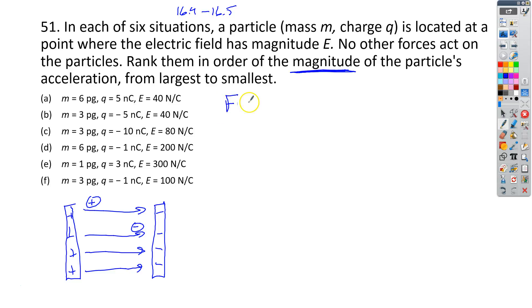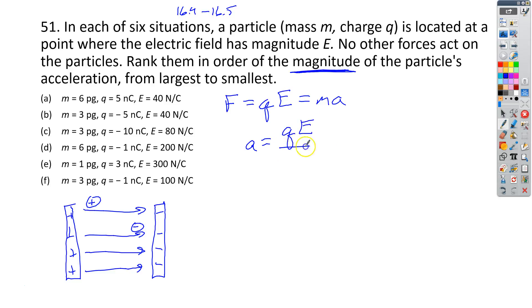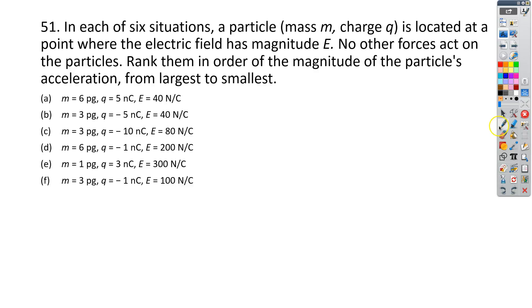We have to remember that the force on the particle is equal to Q times E — the charge times the electric field — and that's equal to the mass of the particle times its acceleration. We just want acceleration, so that's Q times E all over M. Because we're comparing accelerations, we don't have to know the true accelerations, so we don't have to worry about prefixes like pico or nano. We're just going to plug numbers in.